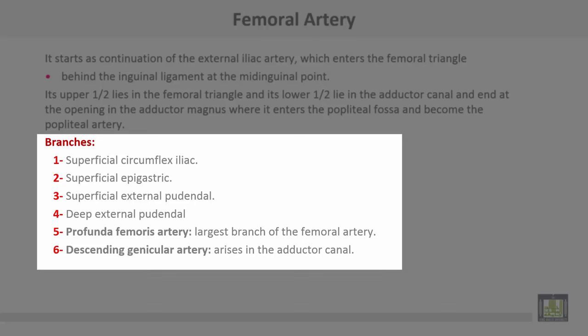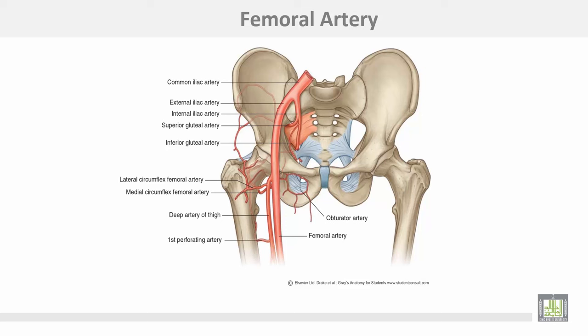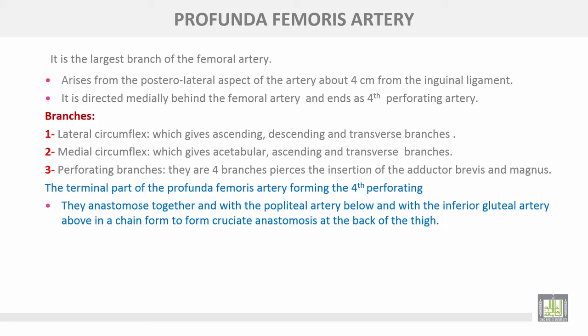The profunda femoris artery is the largest branch of the femoral artery. The descending genicular artery arises in the adductor canal. The profunda femoris arises from the posterolateral aspect of the femoral artery about four centimeters from the inguinal ligament, directed medially behind the femoral artery, and terminates as the fourth perforating artery.